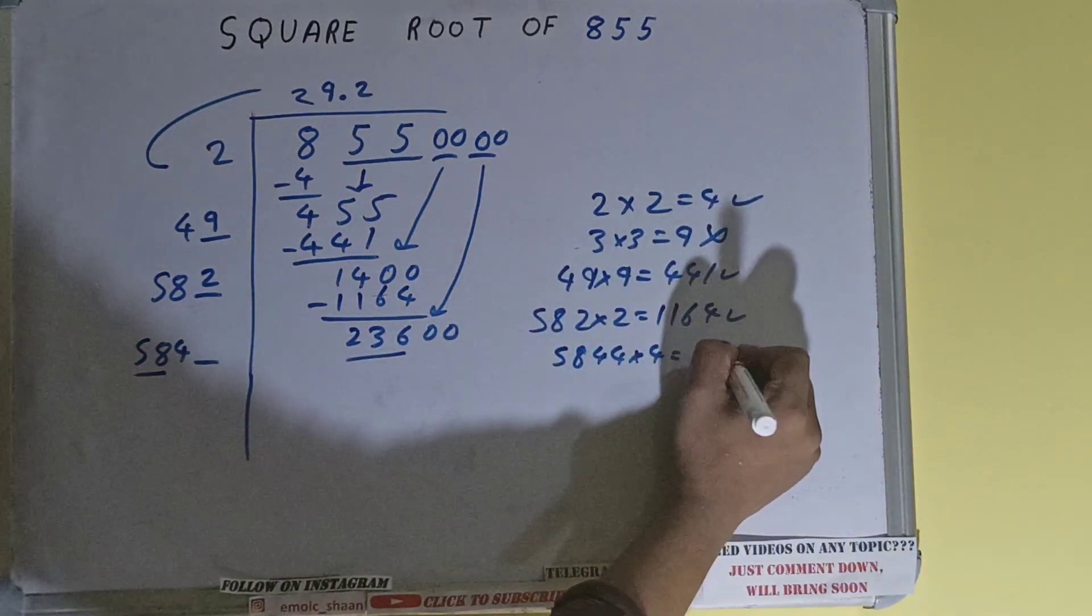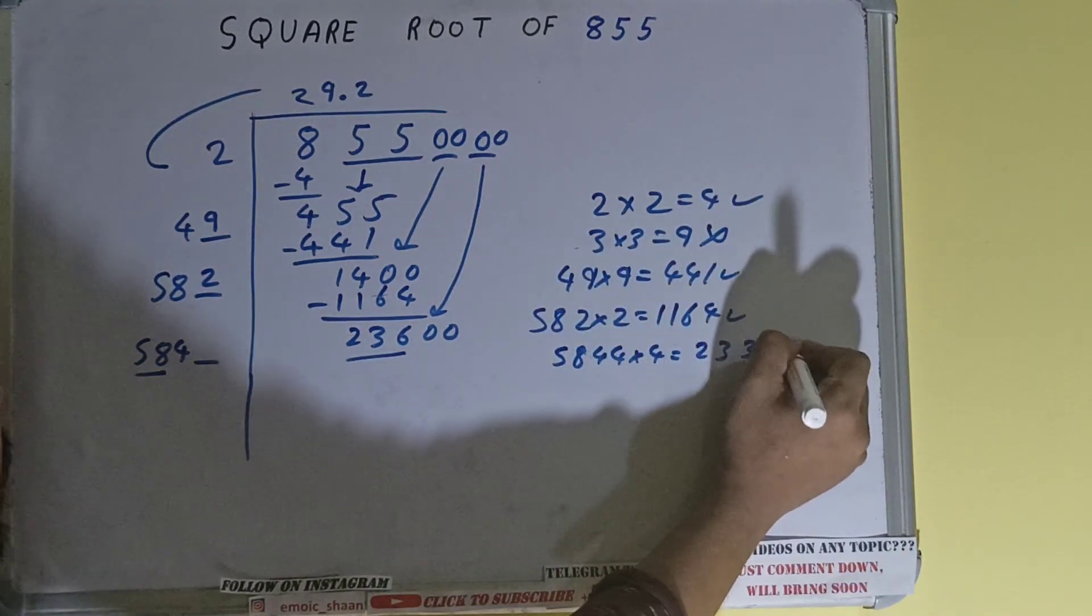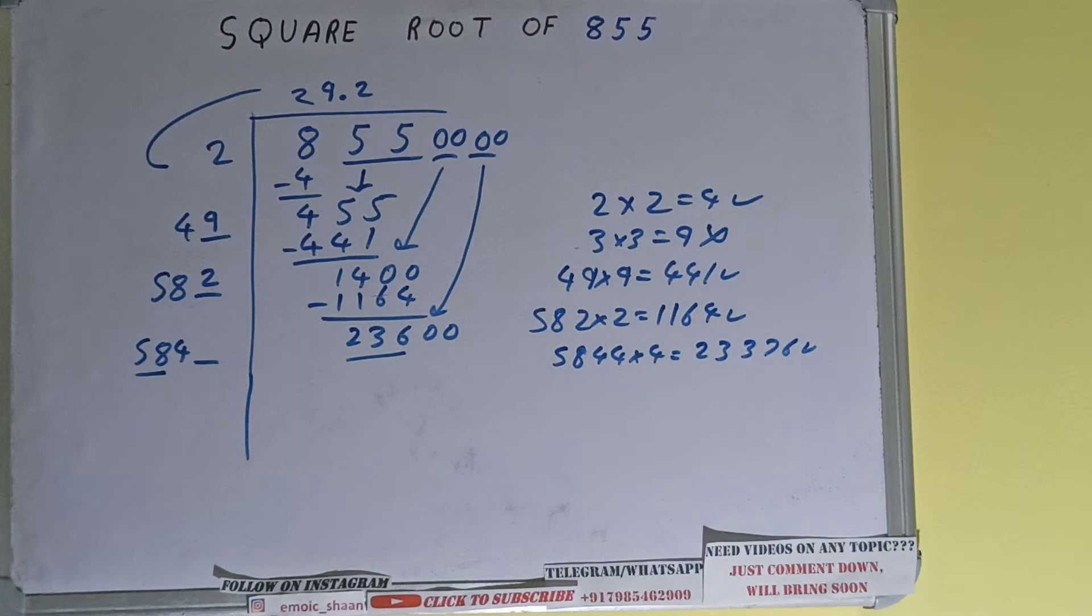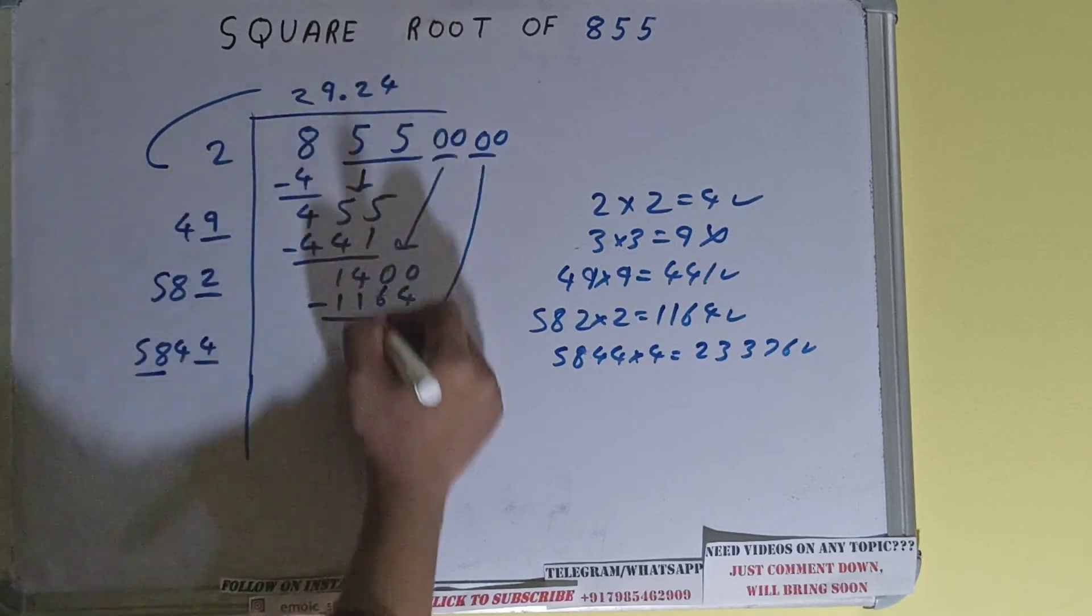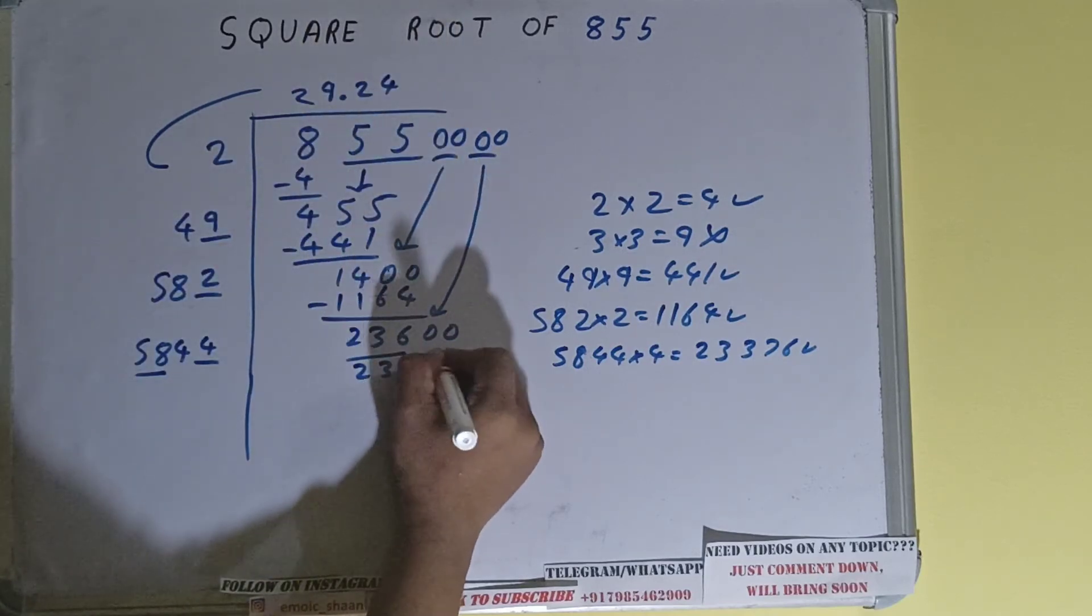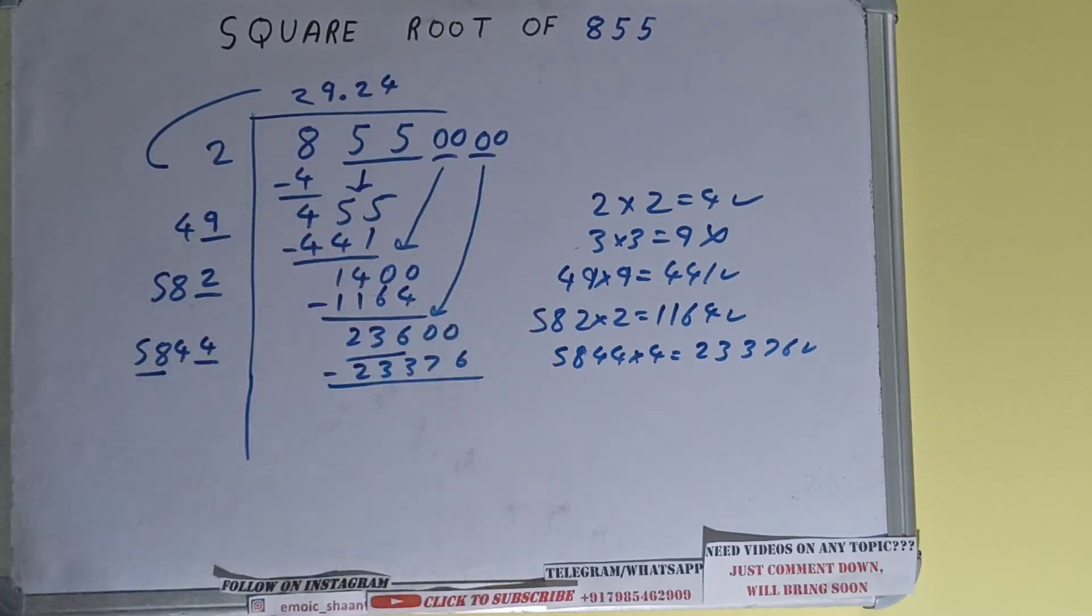So 4 here and 4 here, 23376. Subtract it and 2224 will be left.